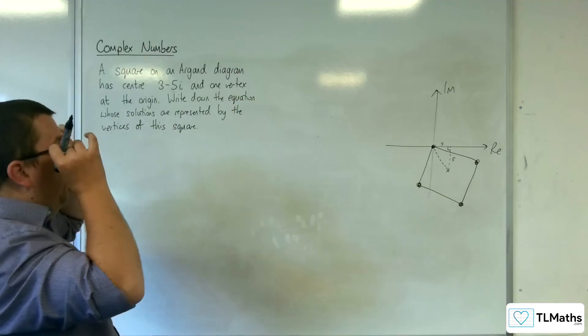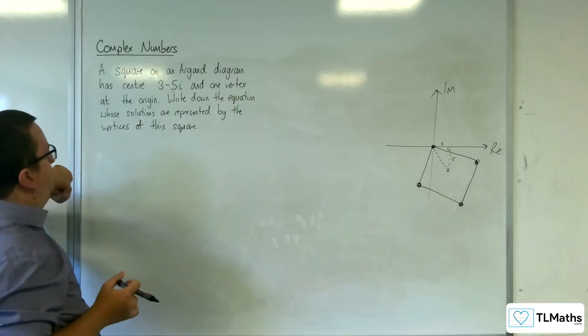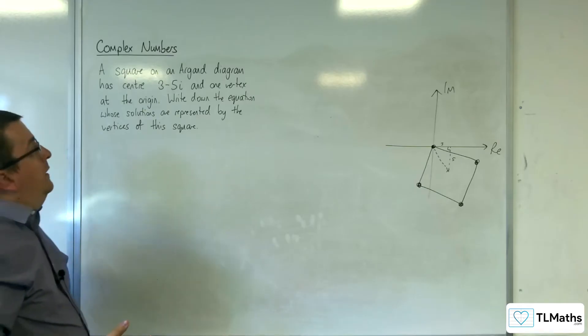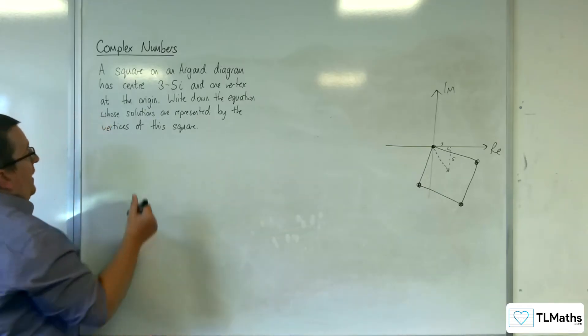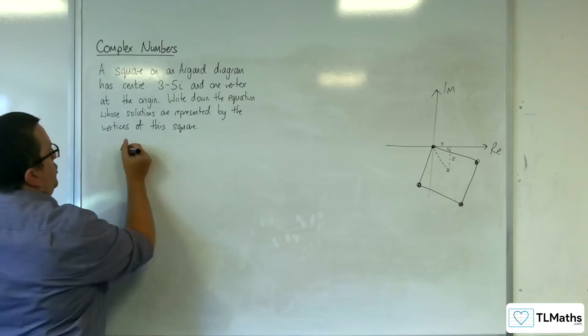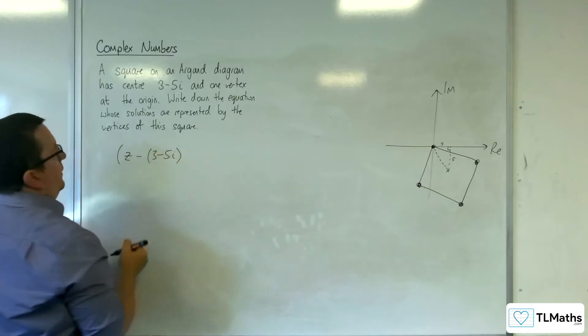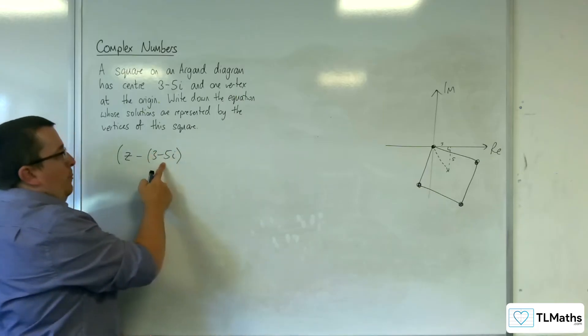Now, what we already know about finding the roots of complex numbers so far is that I can already say that the equation should look like this. We should have z - (3 - 5i), so that centers the square at that point.